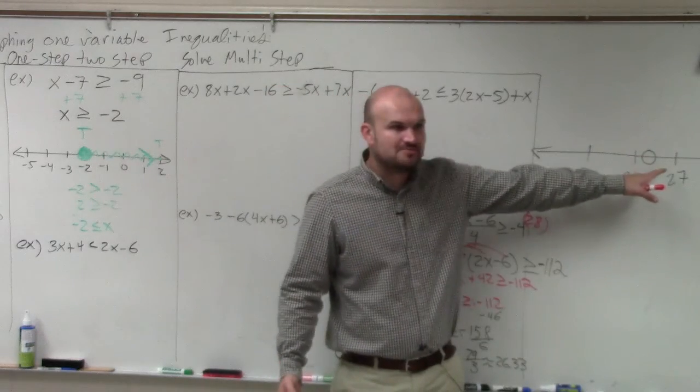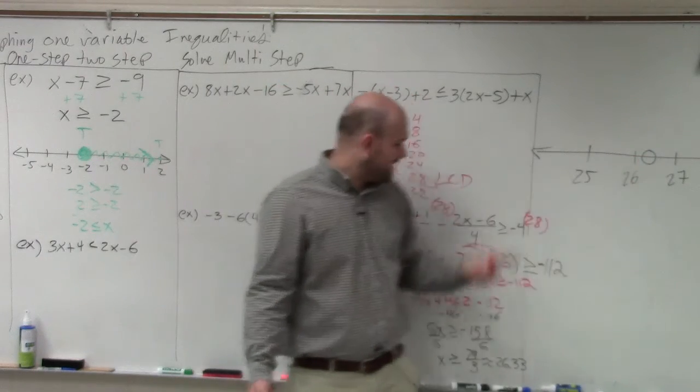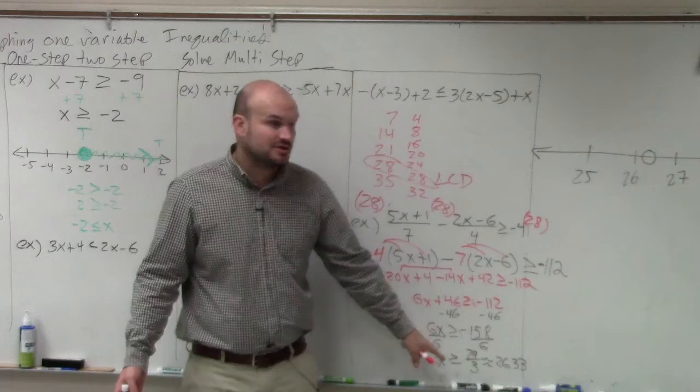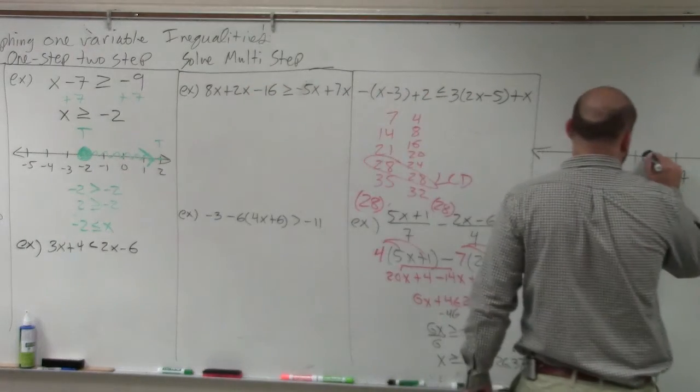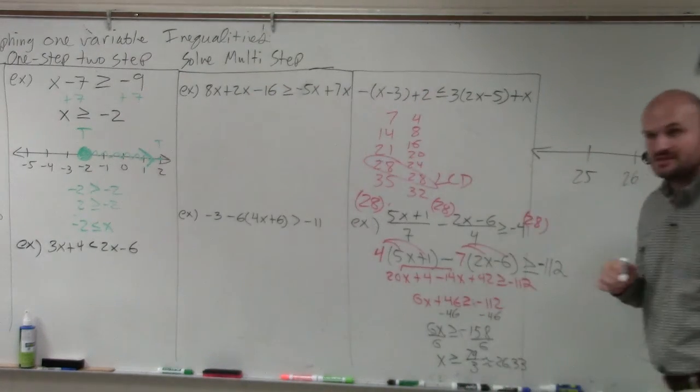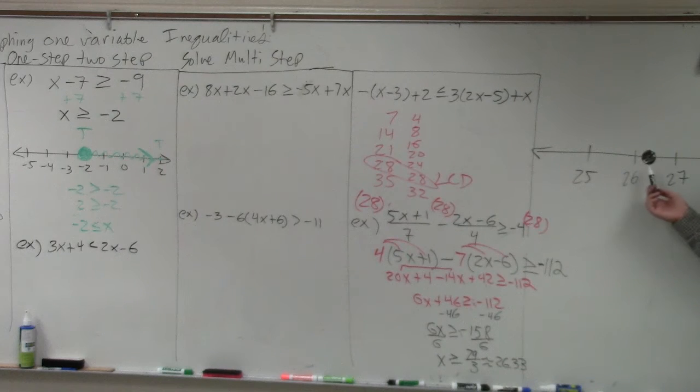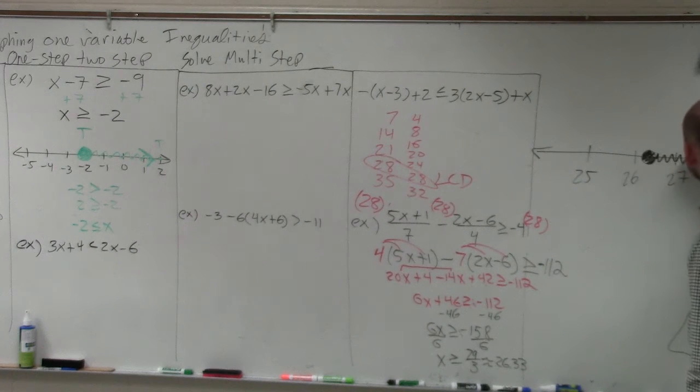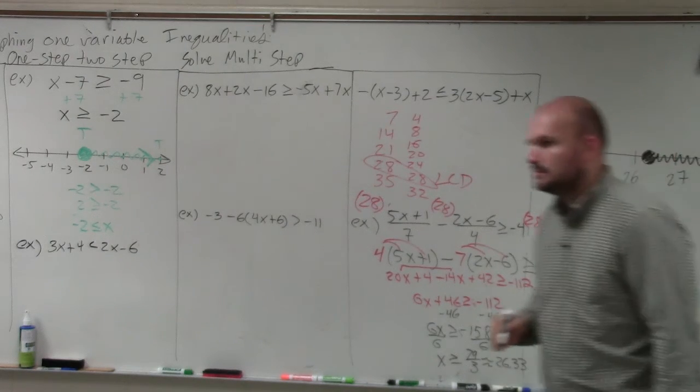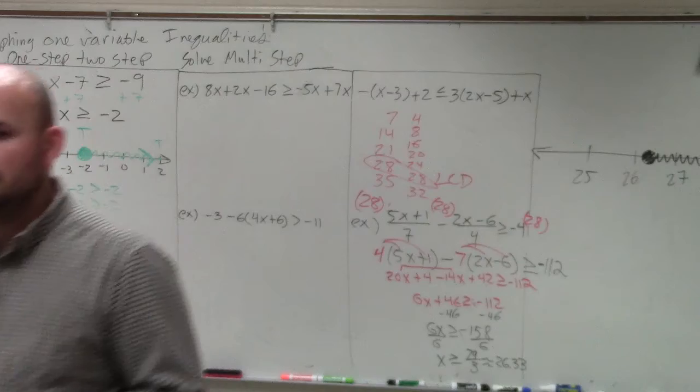So don't put it on one of the hash marks. Put it in between. Then it's greater than or equal to. So that's going to be a solid. It's going to be closed. And then what are the numbers that are greater than 26, to the right or to the left? To the right. To the right. Make sense?